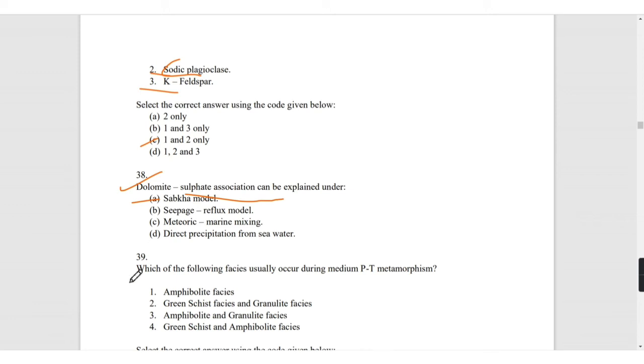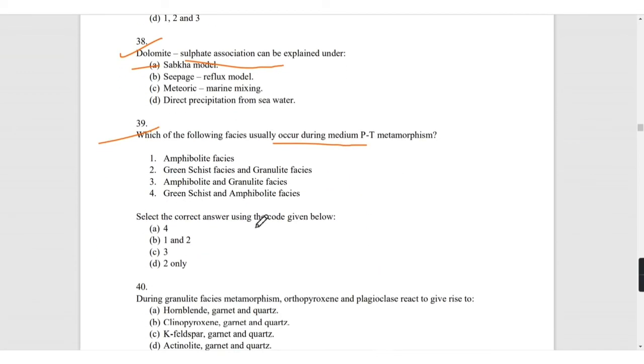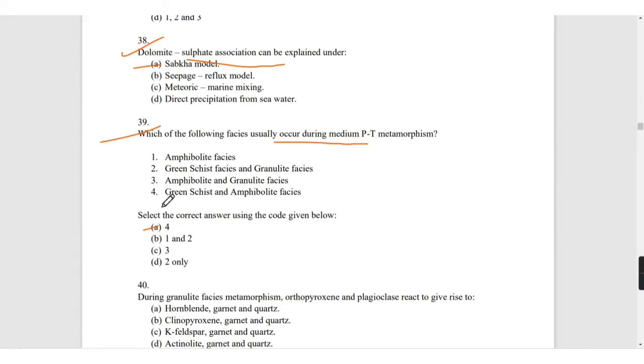Dolomite sulfate association can be explained under the sabkha model. Which of the following facies usually occur during the medium pressure temperature metamorphism? It is greenschist and amphibolite facies which occur in medium PT metamorphism.